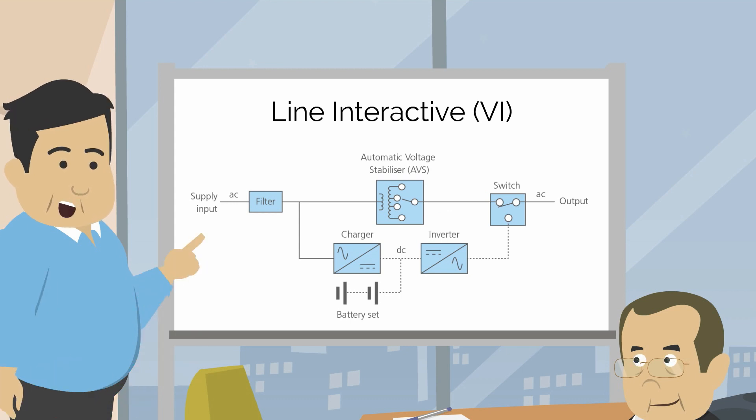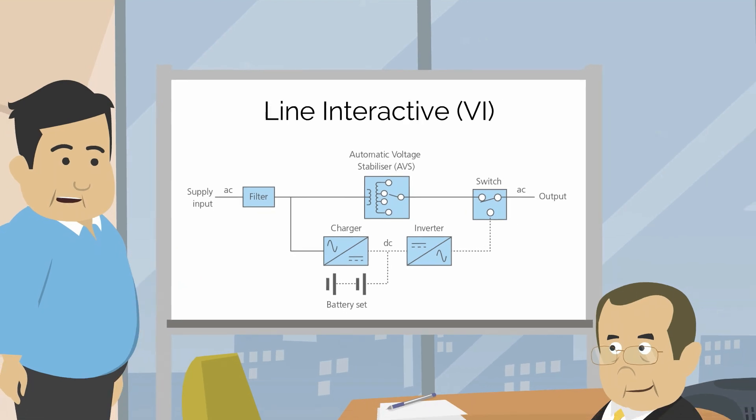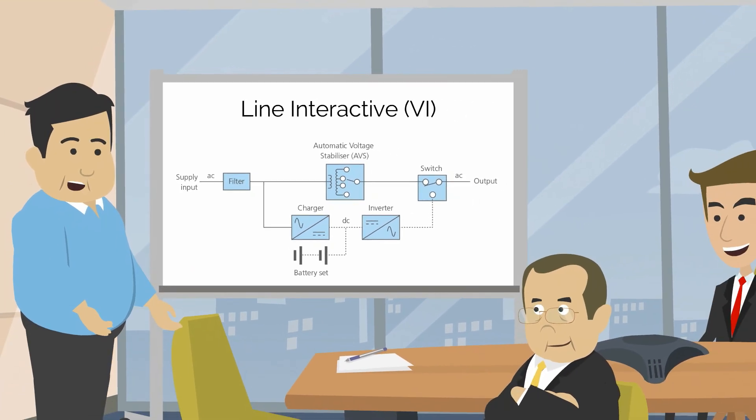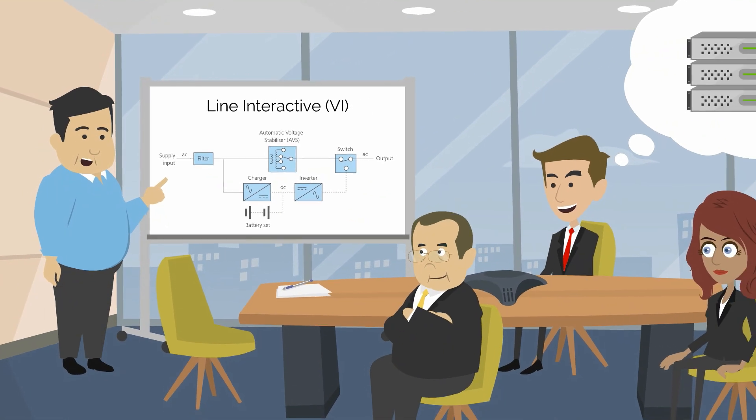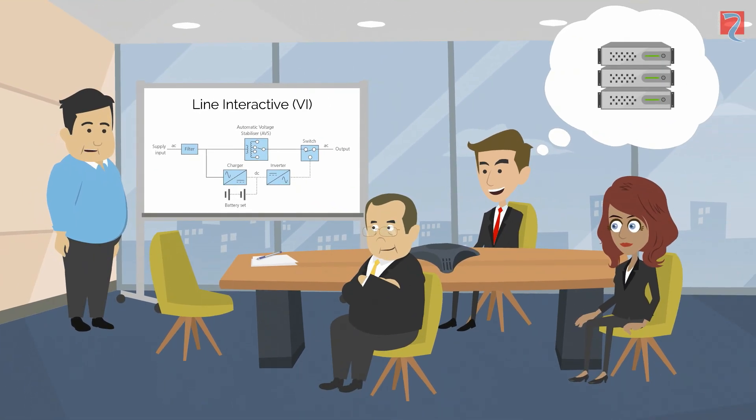Line interactive systems, with their greater power protection features and larger power capacities, are well suited and often used for larger non-critical loads such as telephone switches, servers, and smaller motor applications.